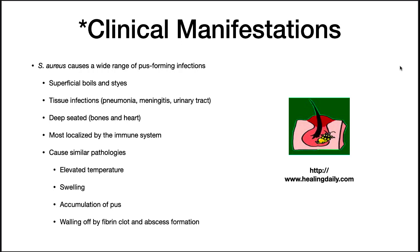S. aureus causes a wide range of pus-forming infections, including superficial boils and styes, tissue infections such as pneumonia, meningitis, and urinary tract infections, and deep-seated bone and heart infections. The immune system localizes most infections, but in rare cases it escapes the immune system and can cause a deadly septicemia.